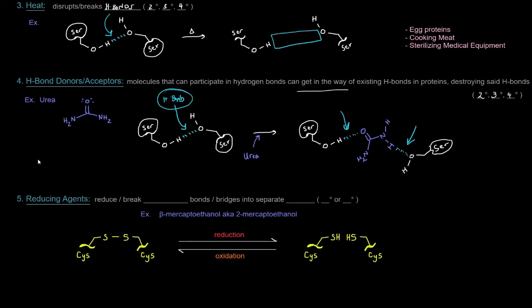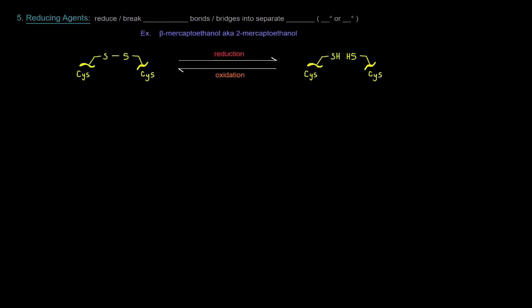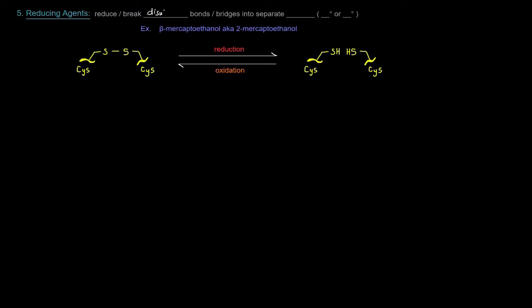Next up, reducing agents. So reducing agents, they reduce or break disulfide bonds or disulfide bridges in two separate thiol groups, separate thiols. And this, of course, can disrupt tertiary or quaternary structure because disulfide bridges can hold tertiary or quaternary structure together. Here I have a disulfide bridge. I have the bond between these two sulfurs on these separate cysteines. If I add a reducing agent, that'll split them apart and we'll have those two separate thiol groups. This is a thiol here and this is a thiol here, but now they're separate. If I want to reform a disulfide bridge, I can oxidize it. Now, before I get into that, an example of a reducing agent is beta-mercaptoethanol or two-mercaptoethanol. It'll destroy disulfide bridges like this.